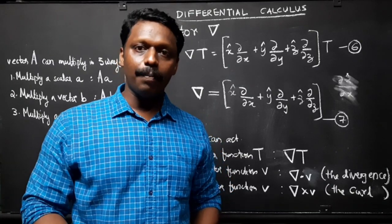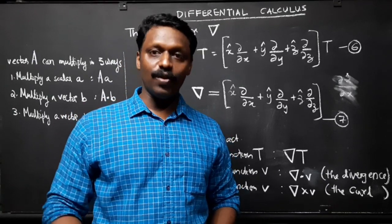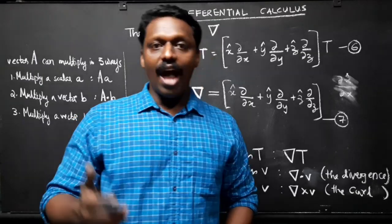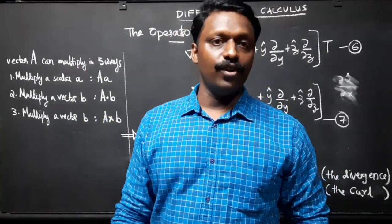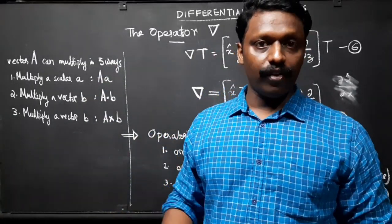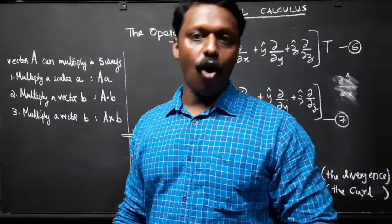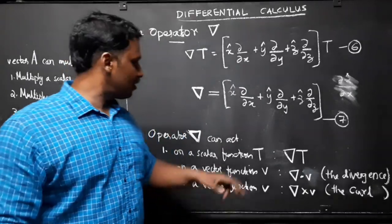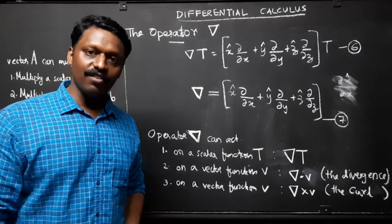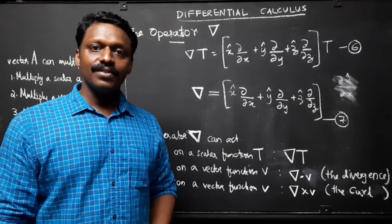Almost anything that can be done with other vectors can also be done with ∇. An ordinary vector a can multiply in three ways: multiply a scalar as a times a, multiply another vector b via the dot product a·b, and multiply another vector via the cross product a×b. Correspondingly, there are three ways the operator ∇ can act: on a scalar function T as ∇T, which is known as the gradient; on a vector function v via the dot product ∇·v, which is known as divergence; and on a vector function v via the cross product ∇×v, known as curl. We have already discussed the gradient.